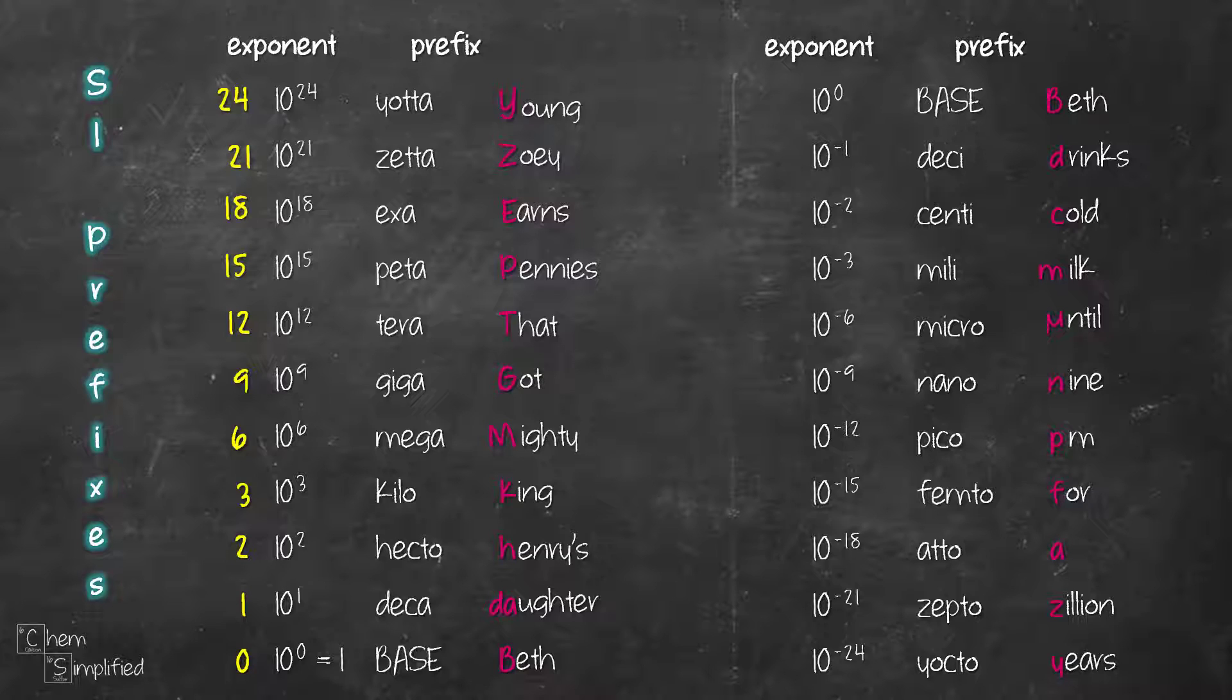We then do the same on the other side. Starting from the base, we go from 0, 1, 2, 3, and then multiples of 3 all the way until we reach 24. The only difference is for this side, we add the negative sign. So there we have it, a super easy way to remember all 20 SI prefixes and their exponent values.